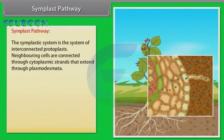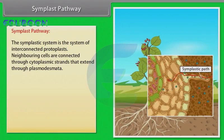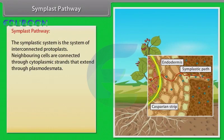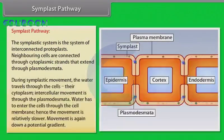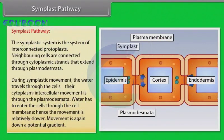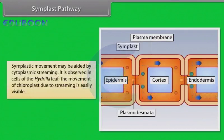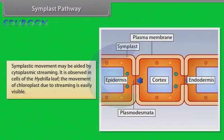The other pathway is the symplast pathway. The symplastic system is the system of interconnected protoplasts. Neighboring cells are connected through cytoplasmic strands that extend through plasmodesmata. During symplastic movement, the water travels through the cells and their cytoplasm; intercellular movement is through the plasmodesmata. Water has to enter the cells through the cell membrane, hence the movement is relatively slower. Movement is again down a potential gradient. Symplastic movement may be aided by cytoplasmic streaming, which is observable in cells of the Hydrilla leaf — the movement of chloroplasts due to streaming is easily visible.